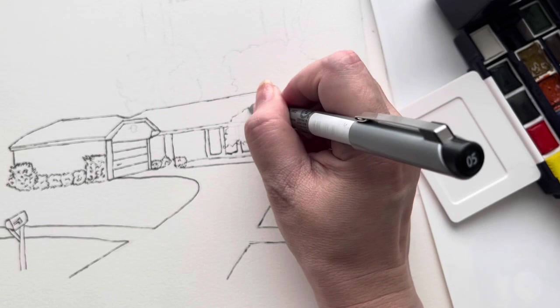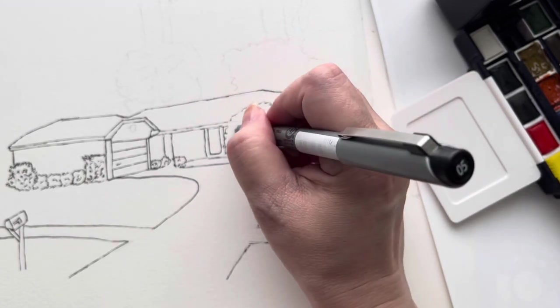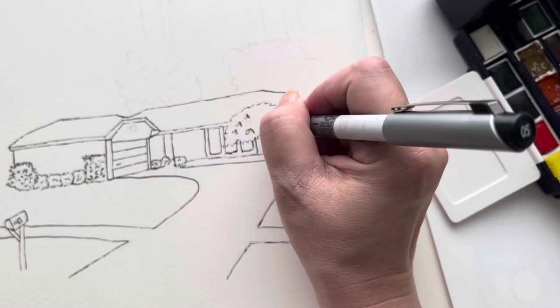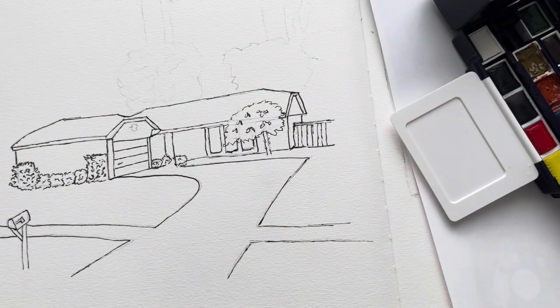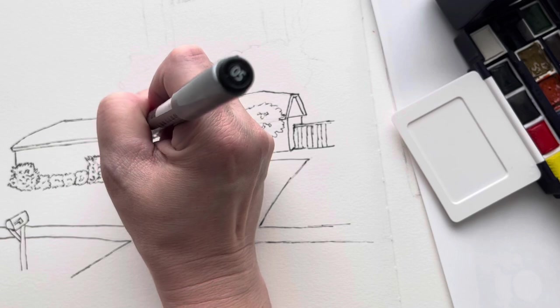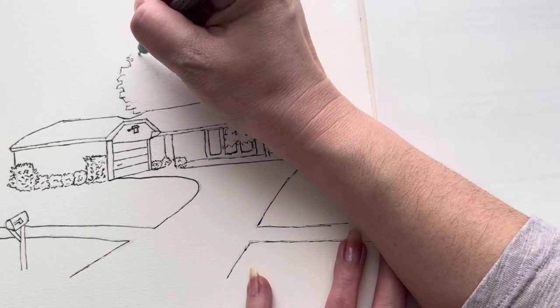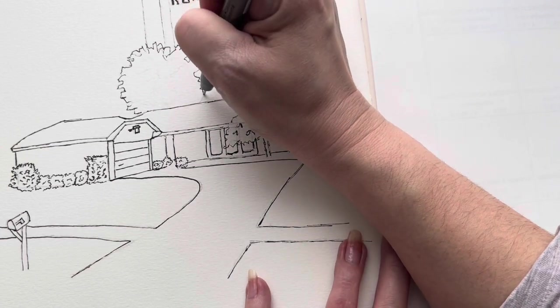But my mom had this big pink mimosa tree in the front yard, so that's what I'm trying to put right there in front of the windows of the house. It was usually green, only pink for like a month out of the year. I don't really have a good pink in this particular set.